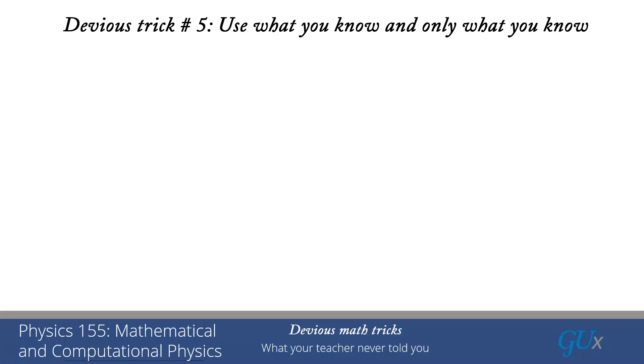Devious trick number five. This is our last devious trick. Use what you know and only what you know. I can't tell you how many times just doing this will get you much farther along. How many times have you been given a problem set, you open it up, start looking at the first problem and you're like, I have no idea how to do this. And then often the next thing you do is you start searching the web. I'm going to try to get you to stop searching the web and instead look for what you know and try to see how you can get from what you know to where you need to be. It does require you to think, but you'll find that it really makes you an independent problem solver.